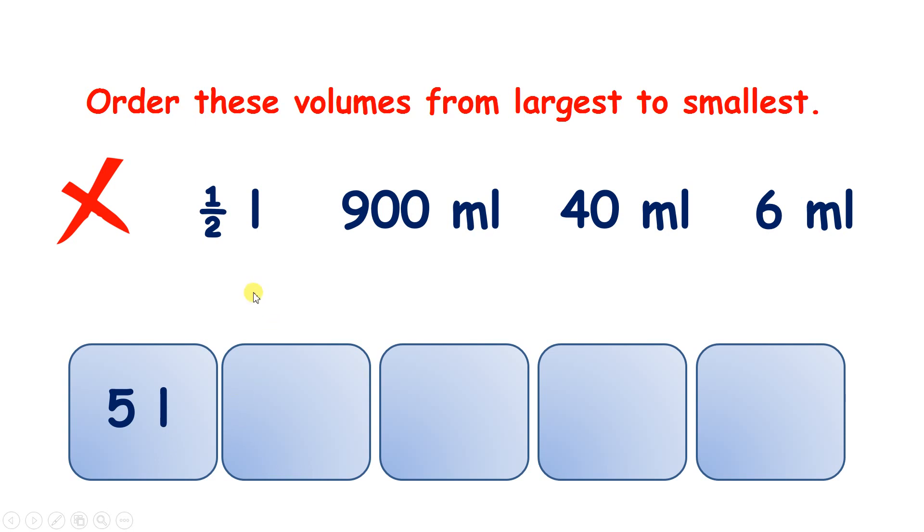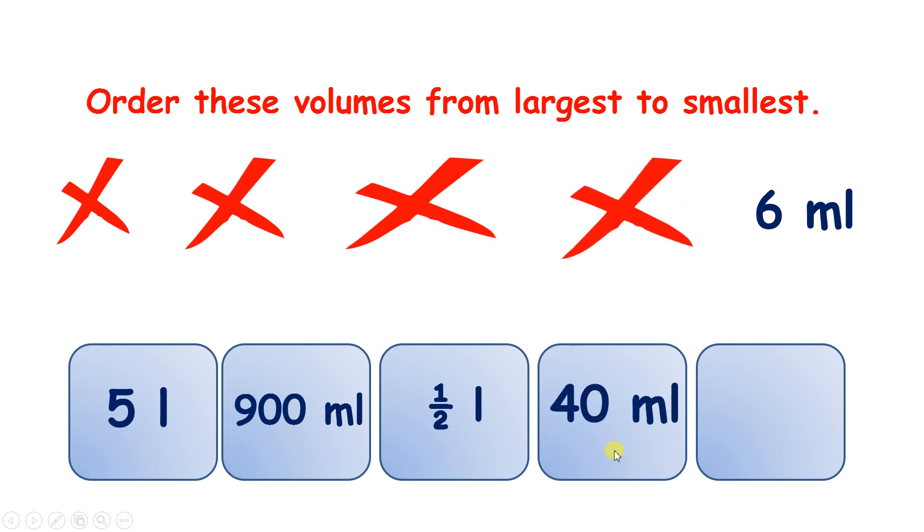Now you might think half a litre is next, but half a litre is only 500 millilitres, and we have 900 millilitres. So 900 millilitres comes next, then we have half a litre, which is 500, then our next largest is 40, and then the smallest volume is 6 millilitres.